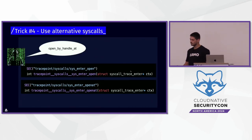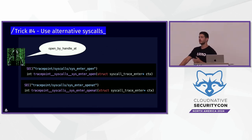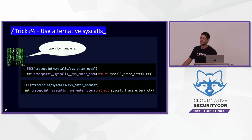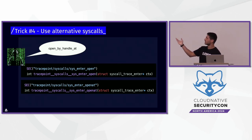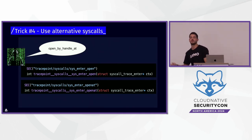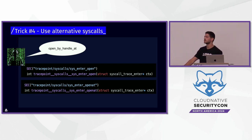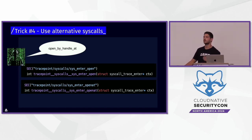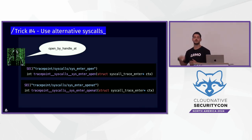The next trick is relatively easy and simple: just use alternative system calls. Runtime detection tools usually hook the common system calls. For example, from BPF opensnoop — they hook open and openat, which are the common system calls for opening files, but they don't hook open_by_handle_at. Many of the famous tools also don't hook that system call. So you can open files using that system call and stay off the radar.